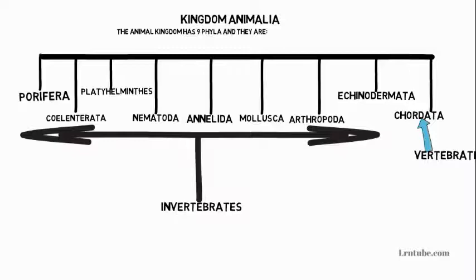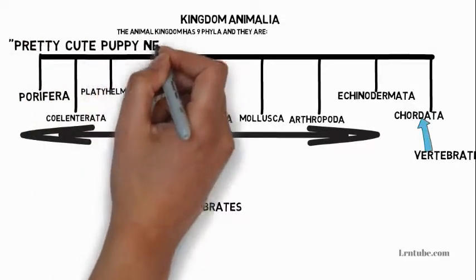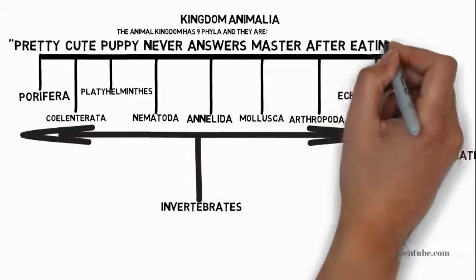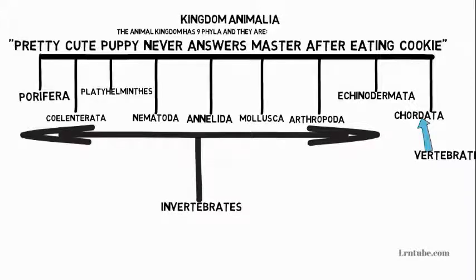To remember all nine phyla, use the mnemonic: 'Pretty Cute Puppy Never Answers Master After Eating Cookie.' This will help you remember all nine phylums. The P can represent any of the P-phyla, so it doesn't have to be arranged in order. In this video, we are going to go through the characteristics of every phylum and give examples.